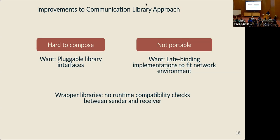How can we address these shortcomings? For our composability problem, we want libraries to be pluggable with some standard composable interface. One approach is to build wrapper libraries that expose a single programming interface over a diverse set of underlying functionality, but this only takes us as far as compile time. The developer still needs to ensure that the other side of the connection is using a compatible set of library configurations. Instead, when making a connection at runtime, we want a way to ensure the endpoint has a compatible composition of libraries, rather than relying on convention or developer configuration. And for our portability challenge, we want to make it easy to move applications to different network environments without completely reimplementing them.